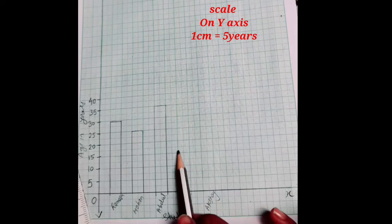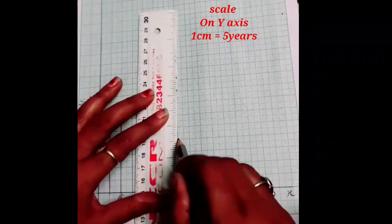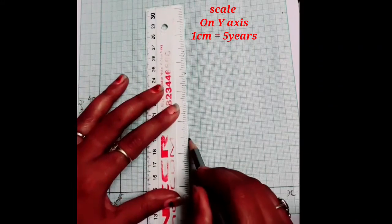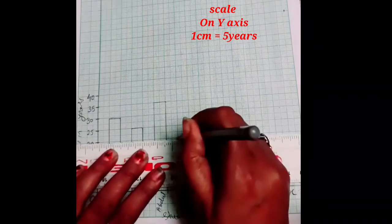And the next one is given. Govind and Govind age is given 20 years. So 20 is here. Mark till Govind. 20 years.